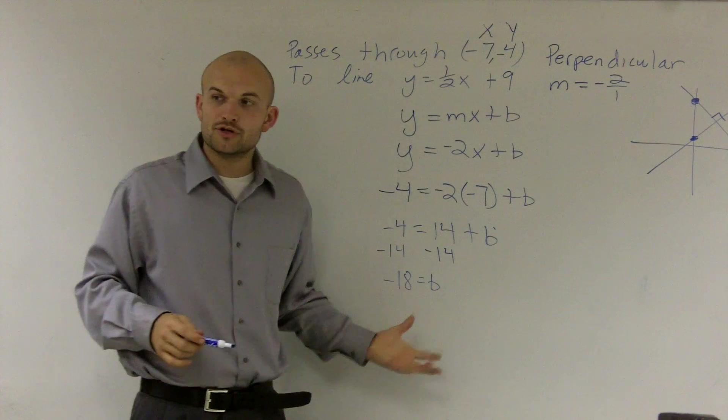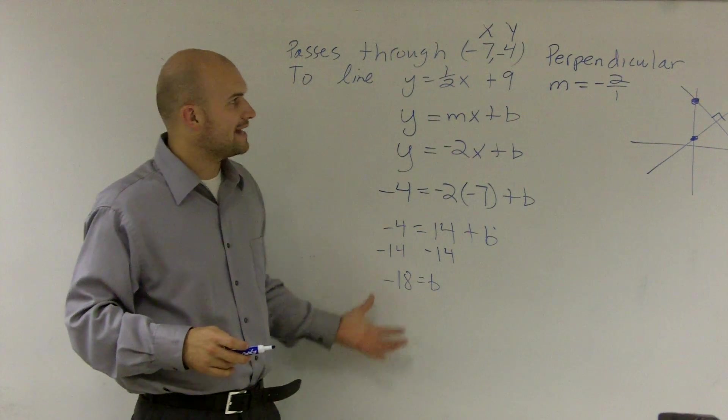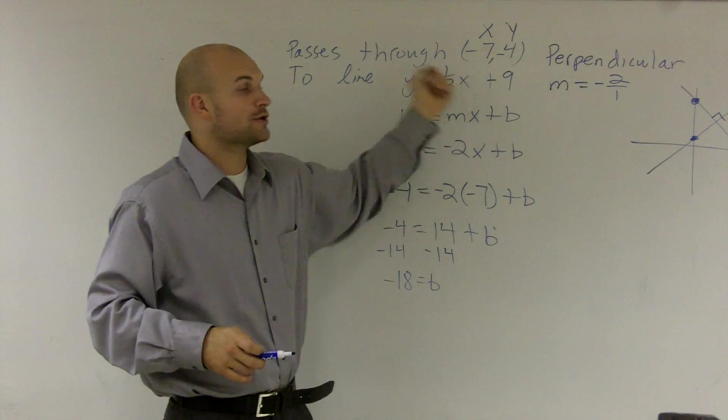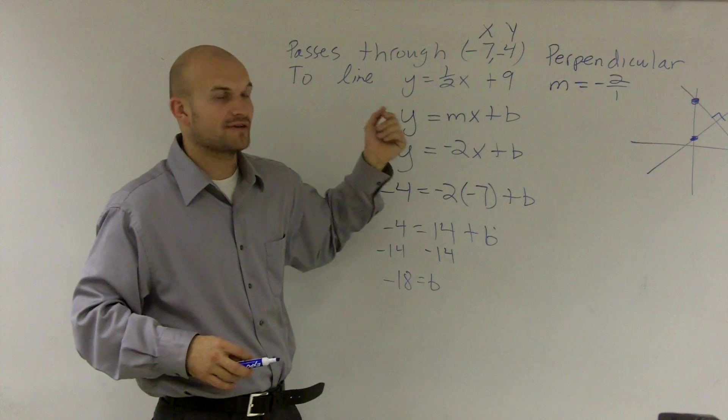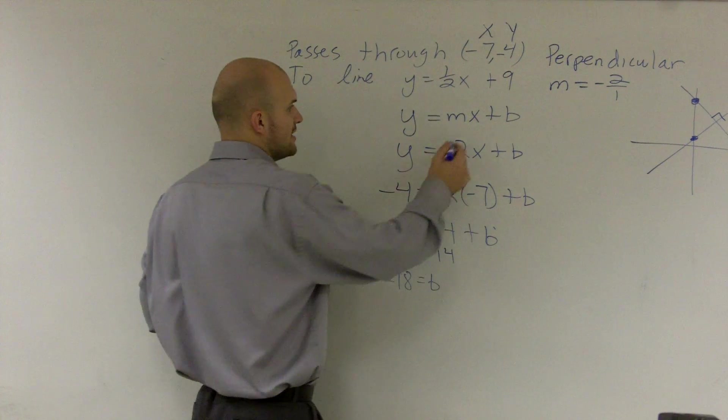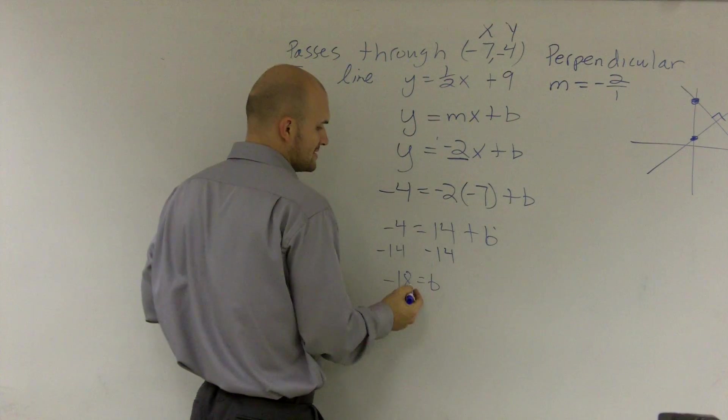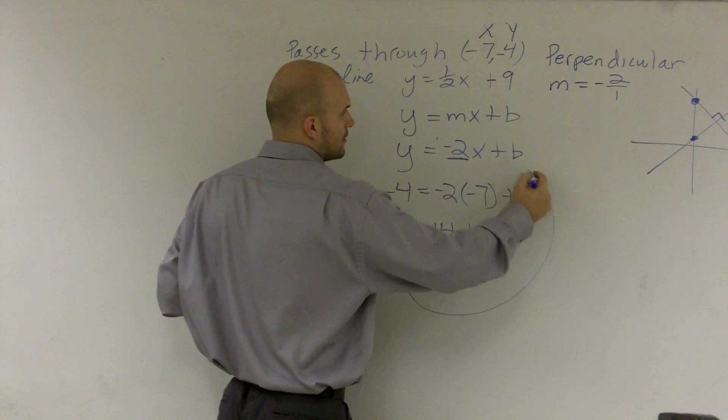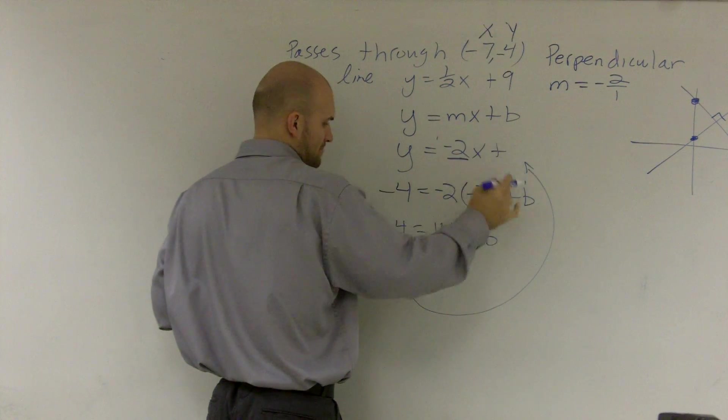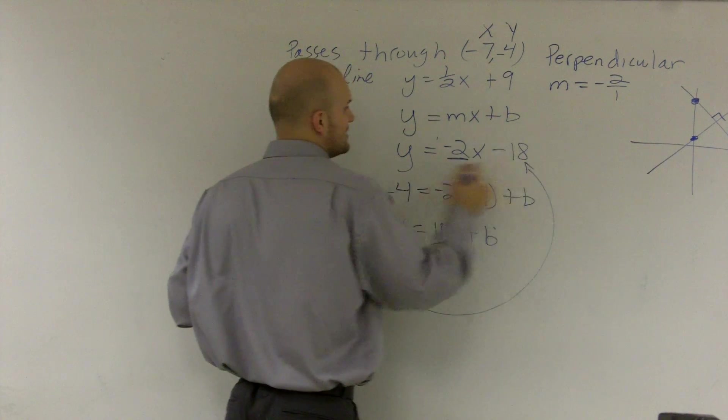So that is now my new y-intercept for the line that is perpendicular to this line that goes through the point negative 7, negative 4. So now I already have my new slope. Now I just need to put in my new b. So instead of writing b, I can write minus 18.